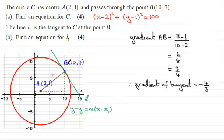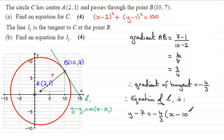So, again, we'll have an intro for this. Therefore, equation of L₁ is: it's going to be y minus y₁, y₁ is the 7, equals m the gradient, which is minus 4 thirds, and this is multiplied by x minus x₁, which is the 10. And it said, find an equation for L₁, so this would do.